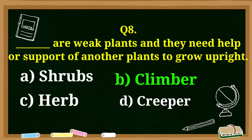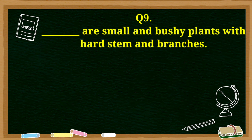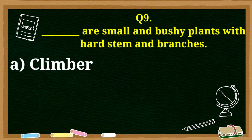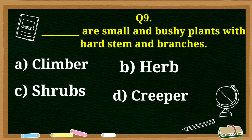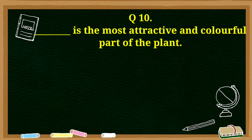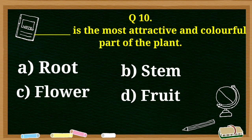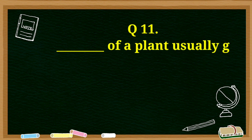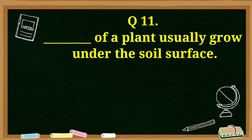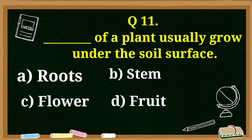The answer is climber. Dash are small and bushy plants with hard stem and branches: climber, herb, shrubs, or creeper? The answer is shrubs. Dash is the most attractive and colorful part of the plant: root, stem, flower, or fruit? The answer is flower. Dash of a plant usually grow under the soil surface: roots, stem, flower, or fruit? The answer is roots.